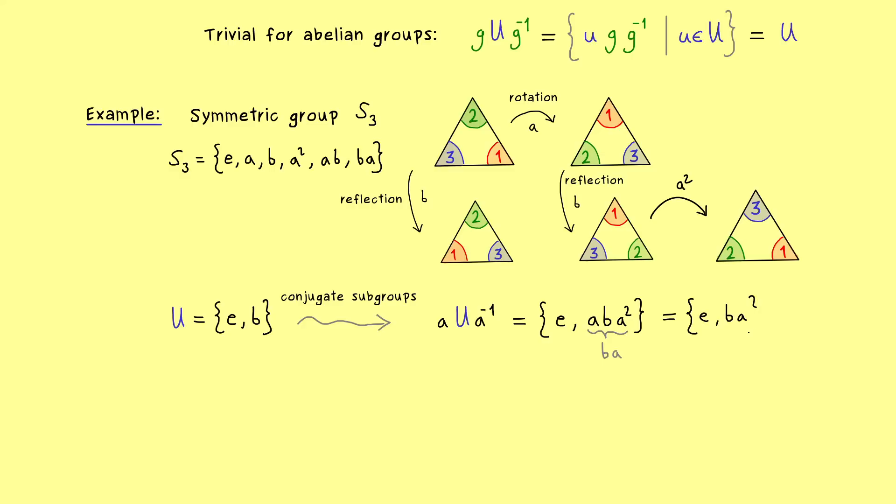Therefore our conjugate subgroup here is also a subgroup with two elements. But definitely not the same as U. Okay, but now we can also look at another conjugate subgroup. So instead of g now let's use our element a squared.